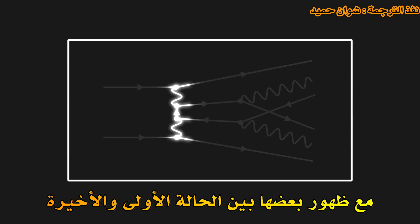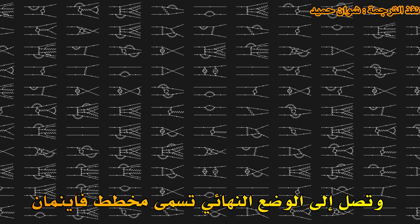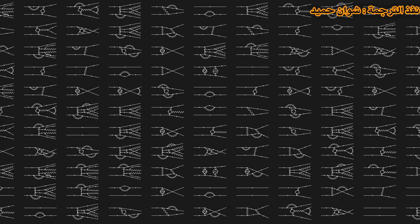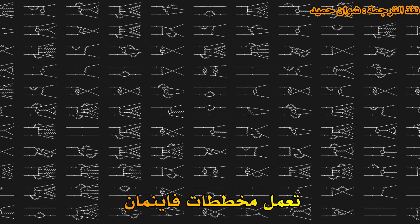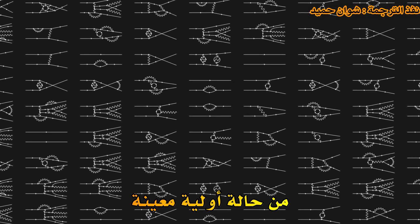And if we stop the evolution of the field after a certain time to look at the outcome of each scenario, we sometimes find our two electrons and sometimes more particles, with some having appeared between the initial and final instance. Each of these scenarios, which start from an initial situation and reach a final situation, is called a Feynman diagram. Feynman diagrams transcribe the different possible evolutions of our quantum fields from a given initial situation.